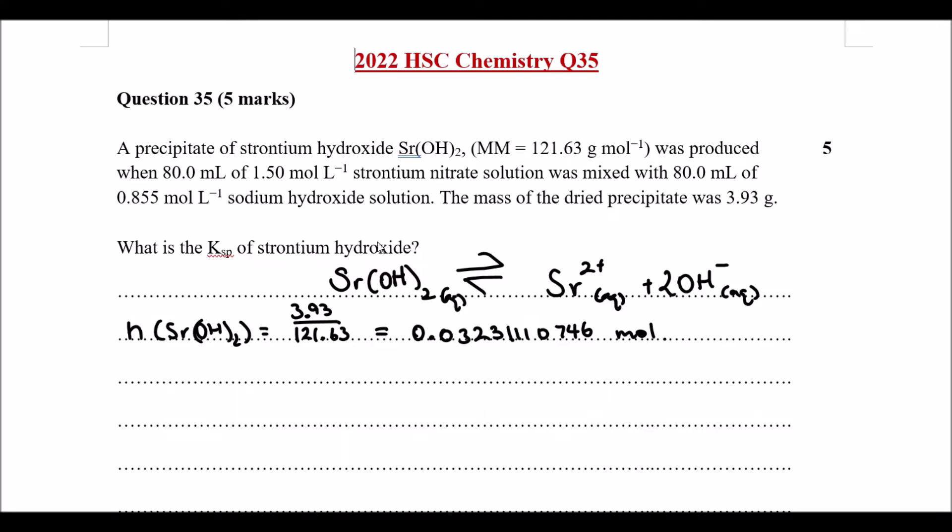If we then look at the amount of strontium and hydroxide produced at the end, this is what we get. So strontium 2+ at the end was the exact same, so 0.03231110746 moles.